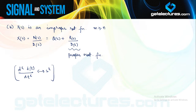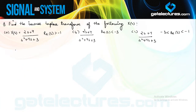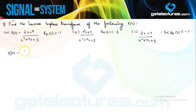Now let us look at a few questions relating to inverse Laplace transforms. The first question gives us the function (2s + 4) upon (s² + 4s + 3) with three different ROCs, and asks us to find the inverse Laplace transform in each case. The first step is expressing this function in terms of partial fractions. We have already performed the partial fraction of this function, and it can be expressed in pole-zero form.